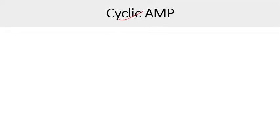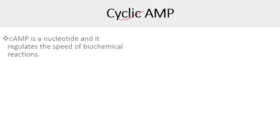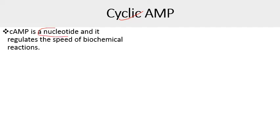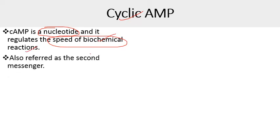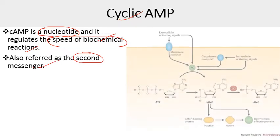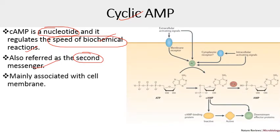Next is cyclic AMP, that is adenosine monophosphate. This is an important nucleotide that regulates the speed of biochemical reactions and is also referred to as a second messenger — primary messengers being mostly hormones. It is synthesized from ATP with the help of the enzyme adenylyl cyclase, giving rise to cyclic AMP, which acts as a secondary messenger and also helps in initiating transcription.